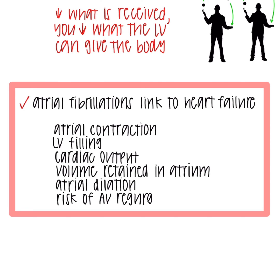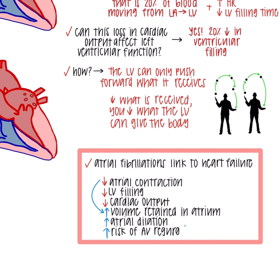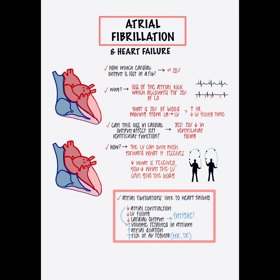In summary, AFib's link to heart failure includes decreased atrial contraction, decreased LV filling, and decreased cardiac output. That reduction in atrial contraction contributes to increased volume retained in the atrium, increasing atrial dilation, which raises the risk of AV regurgitation — your mitral or tricuspid valves. That reduction in cardiac output may also be the cause of fatigue symptoms. Thanks for watching!